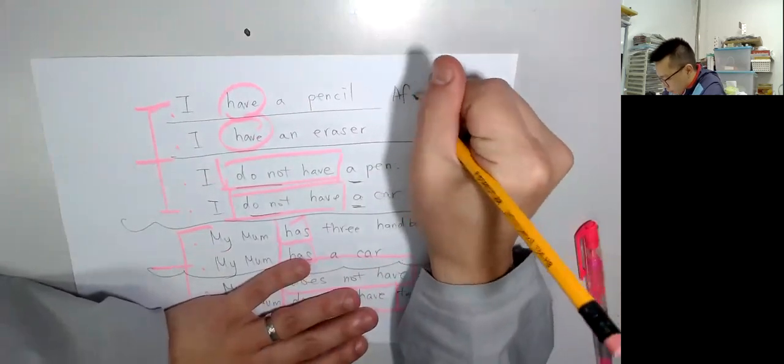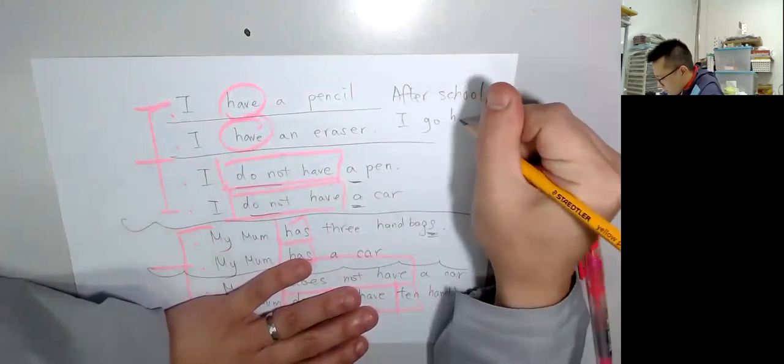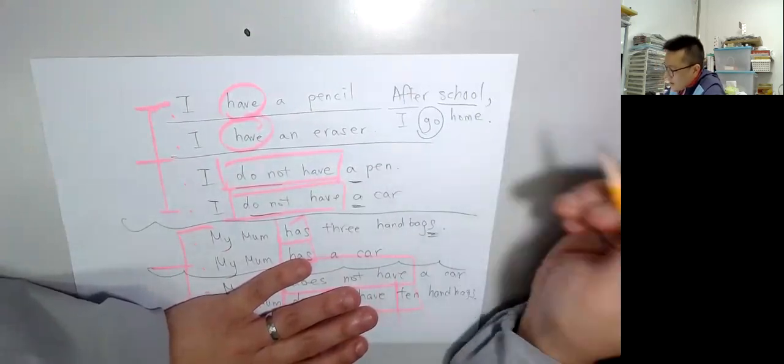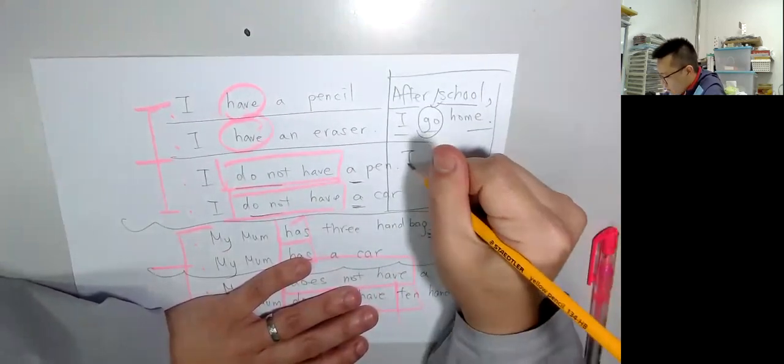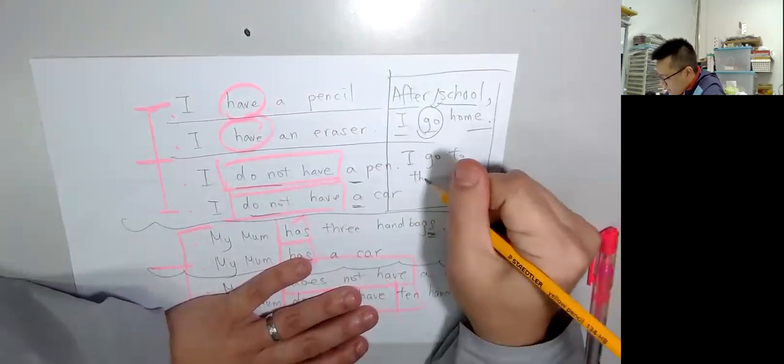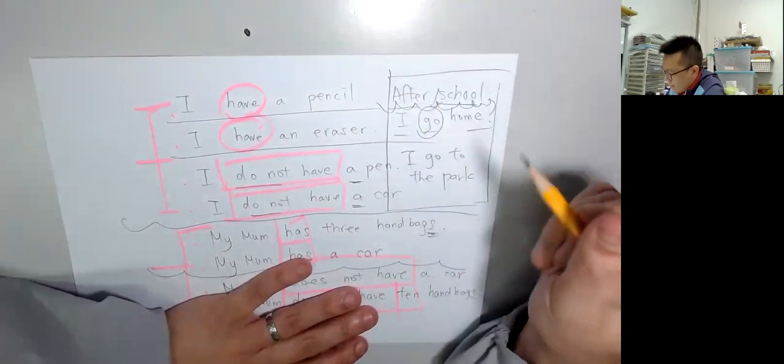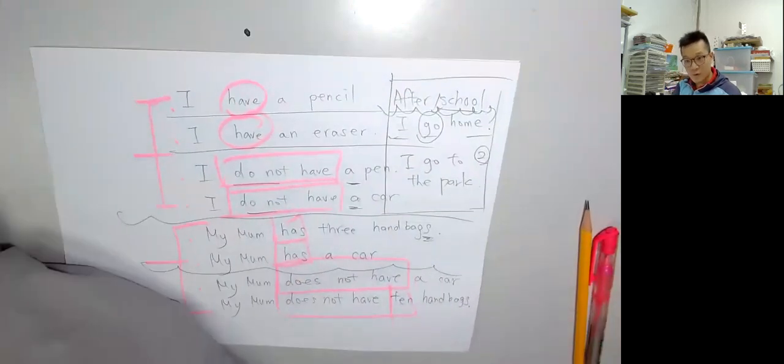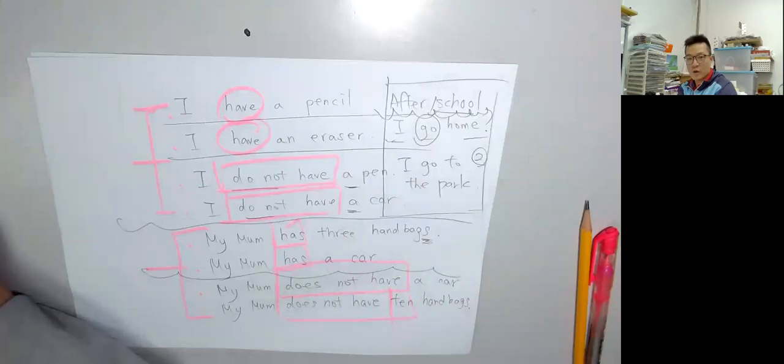After school means after school is finished. After school, I go home. After school, I go to the park. After school, comma. Make two sentences. Verbs are very important. Three categories of verbs. Work hard. Here, copy this set and make your own set. Keep going, keep going.